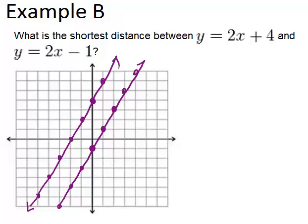Now we're trying to find the distance, or the shortest distance between those two lines, which will be a line perpendicular to both. So now we need to remember that perpendicular lines have opposite reciprocal slopes.